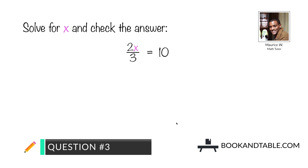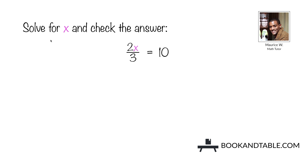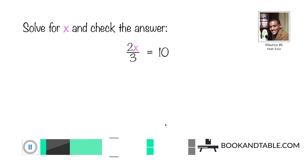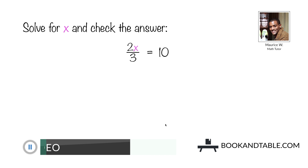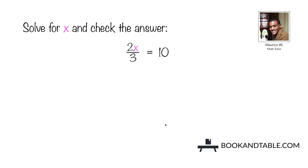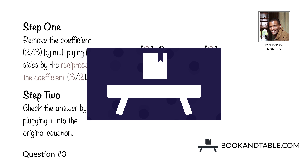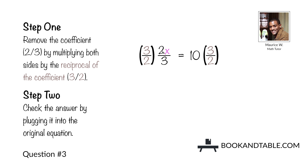Question number three: solve for x and check the answer. 2/3 x is equal to 10. You want to eliminate this coefficient by multiplying it by its reciprocal. The reciprocal is the result of switching the number in the numerator and the number in the denominator — so 2 goes from the numerator to the denominator, and 3 goes from the denominator to the numerator. Step one: remove the coefficient 2/3 by multiplying both sides by the reciprocal, which is 3/2.